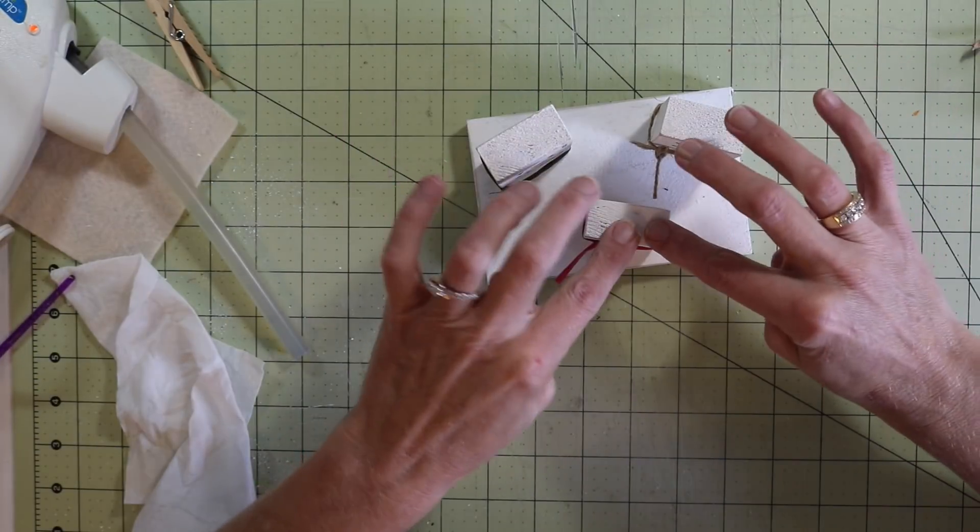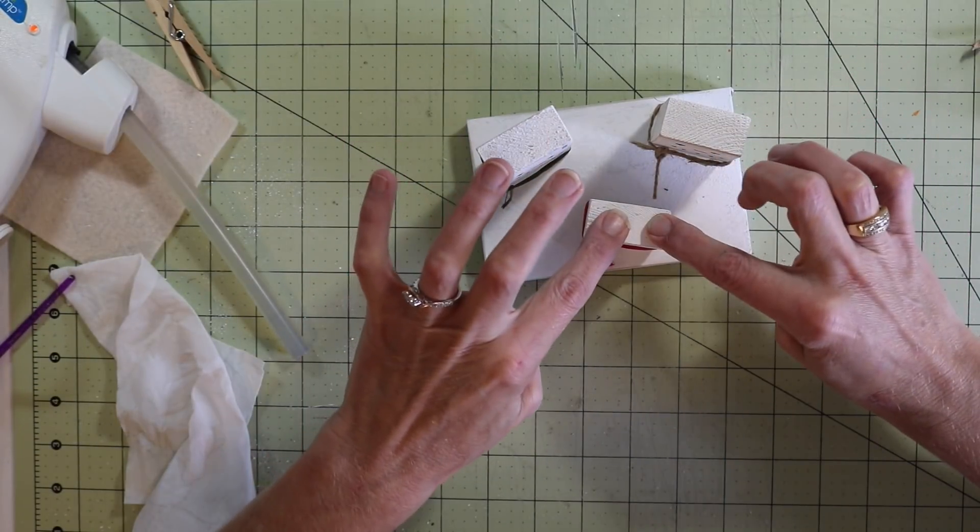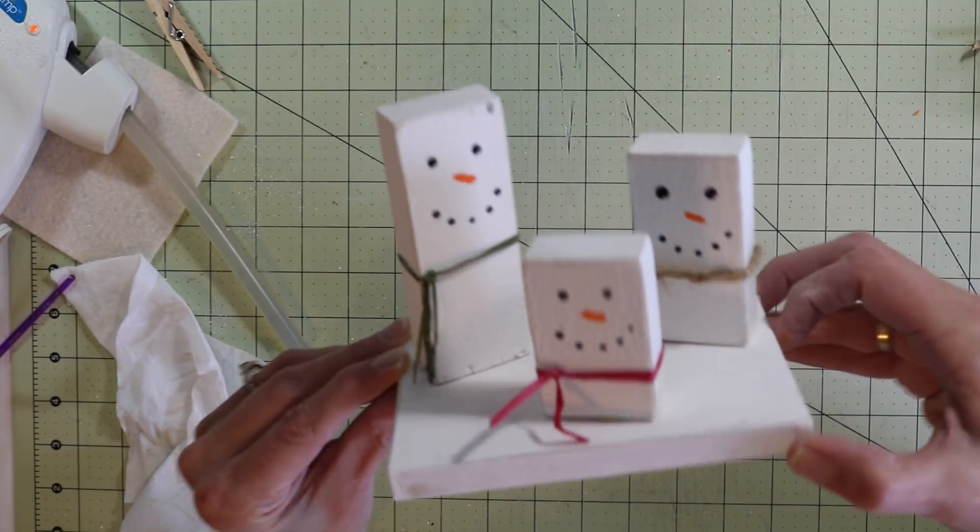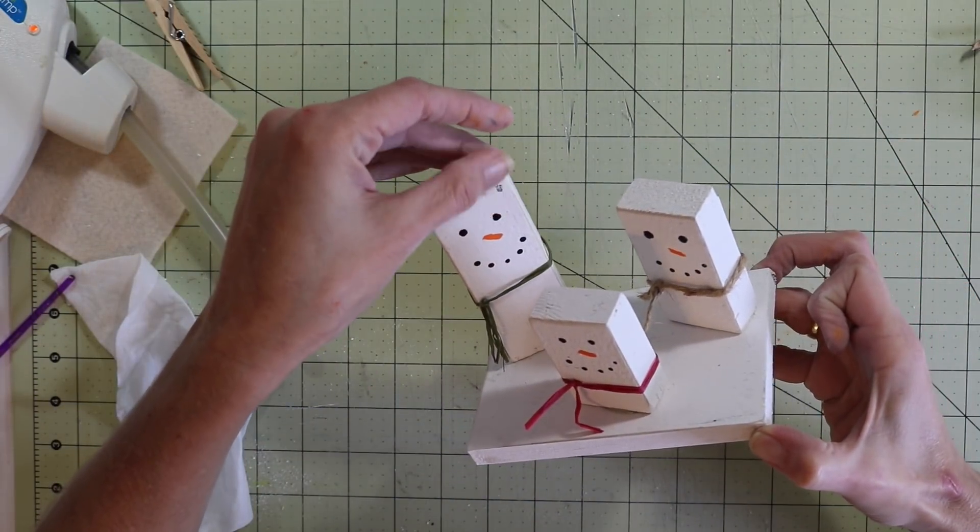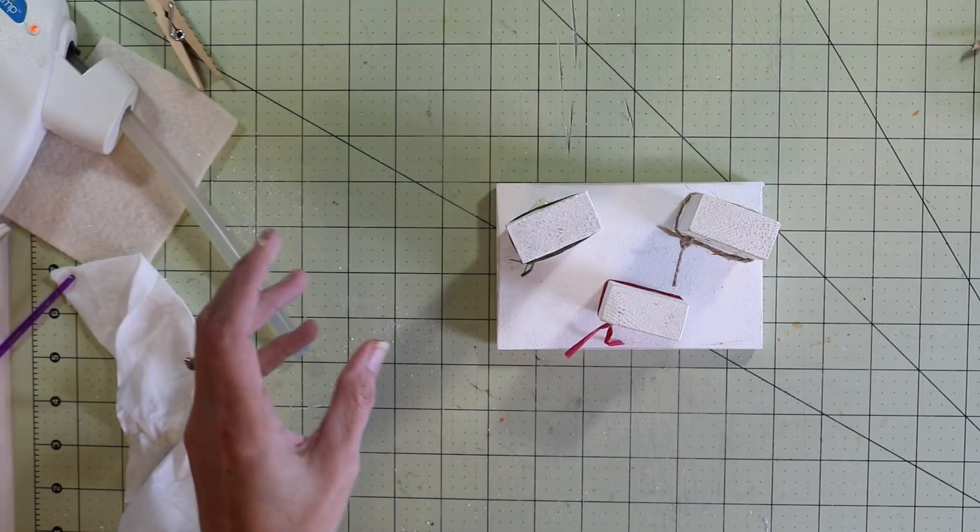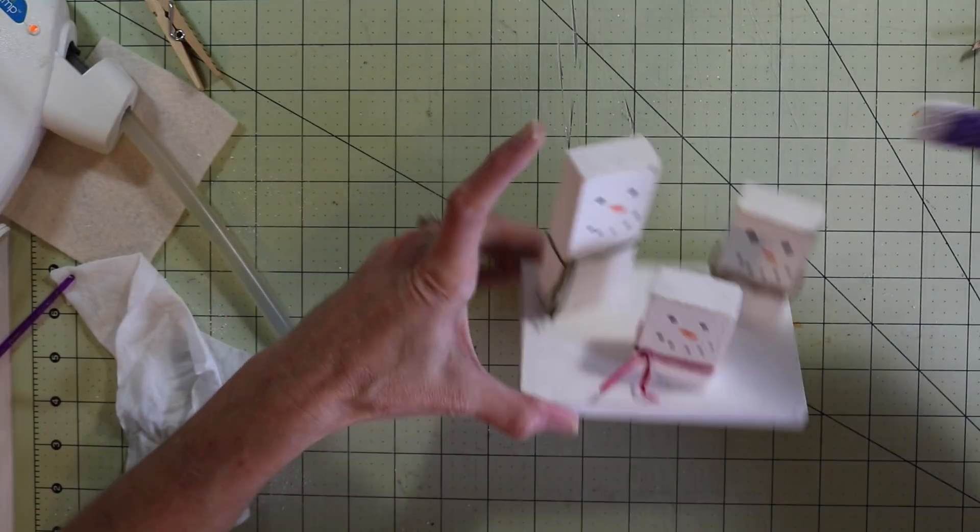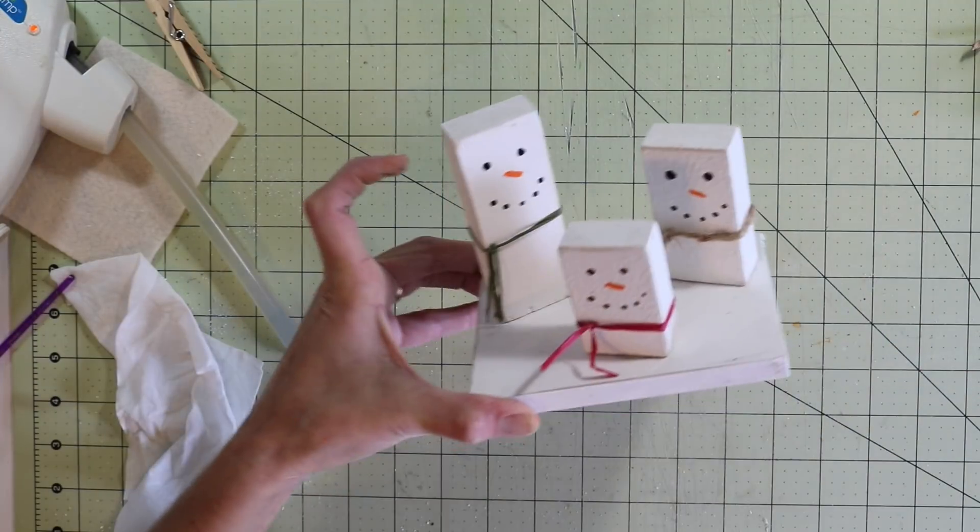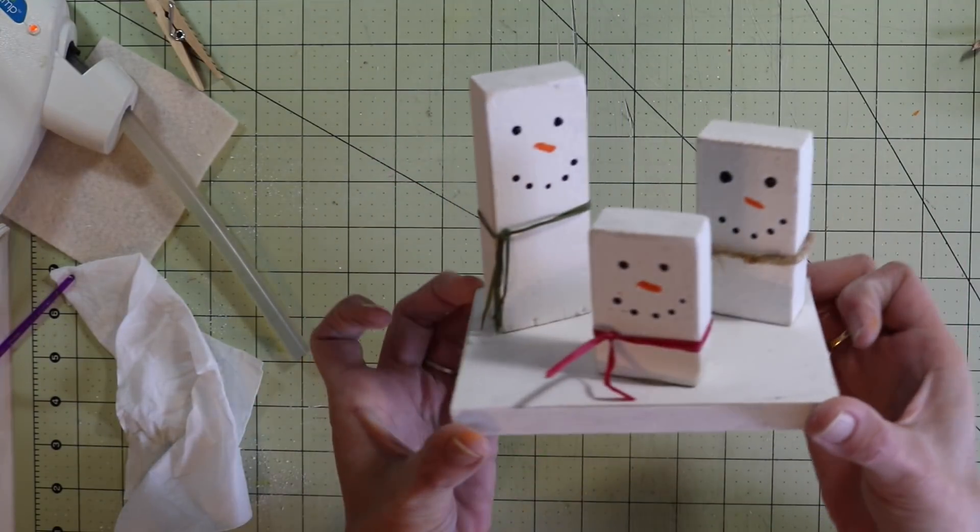And I'll flip them over and you guys can see. How cute, right? Little snowman family. He's got something on him over here. Let's see if I can grab that white sponge again. Let's see if I can fix that to get rid of that black. There we go. Super cute. I absolutely love it.